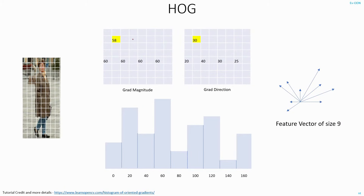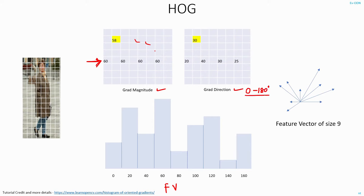Similarly, you will calculate the gradient magnitude and direction at all the pixel positions. I have not shown all of them here — just a few values in this row. Now what we do is we use this gradient magnitude and direction to calculate the feature vectors. If you observe the gradient direction, you will see that all the angles are between 0 and 180 degrees. These angles I divide into 9 different bins.